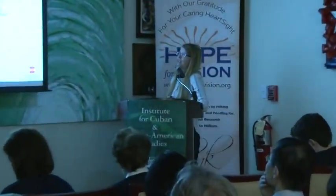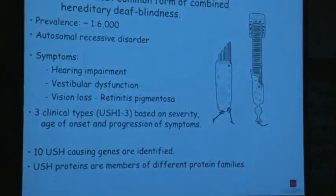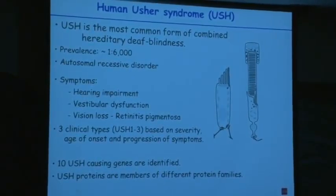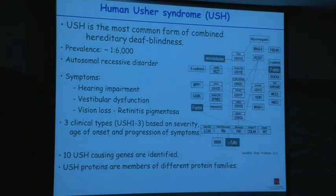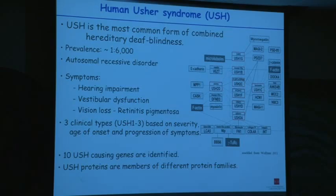I'm going to talk about human Usher syndrome, which is the most common form of combined hereditary deaf-blindness. The clinical symptoms are hearing impairment, vestibular dysfunction, and vision loss. Clinically, three types can be distinguished based on severity, age of onset, and progression of symptoms. Genetically it's much more heterogeneous — so far 10 different Usher-causing genes have been identified and three additional loci are discussed. The proteins encoded by these genes belong to different protein families: a GPCR, a molecular motor, and cell adhesion proteins, and functional analysis revealed that all these proteins are integrated into a large network.